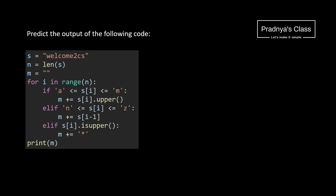There is one more question for practice. Let's understand the code first. Here is one string. We are calculating the length of the string — it is 10 characters. Here is the empty string. There is one for loop where I takes values based on the range function — range of 10 means values from 0 to 9. If the character is between A to M, we change it to uppercase and concatenate it. If the character is between N and Z, we take the character at index I minus 1 and concatenate it. If both conditions are false, we check if the character is uppercase and concatenate star.